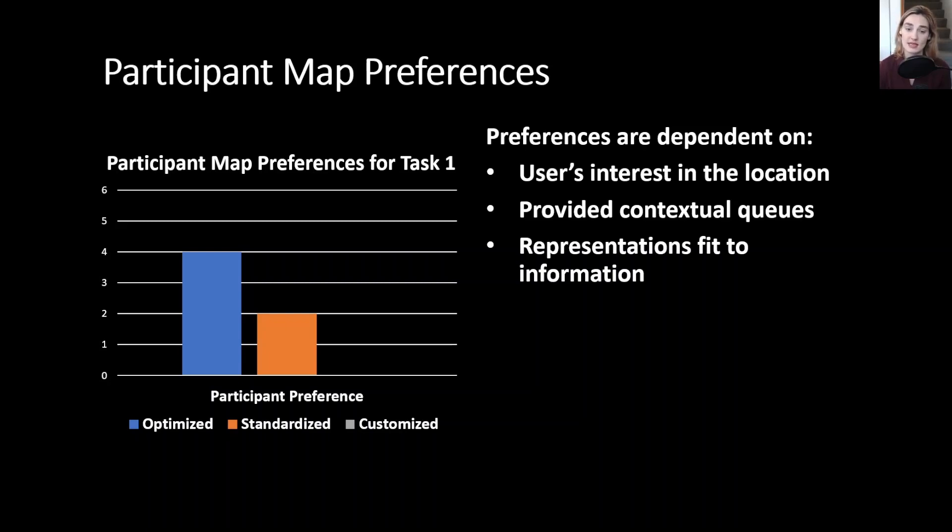What we found out was that the optimized maps and the standardized maps provided important contextual cues about large pieces of information that they didn't know to prefer or to add to their original maps. They also found that the optimized maps use representations that better fit the information than the standardized maps.